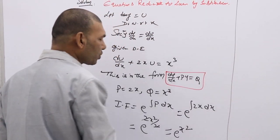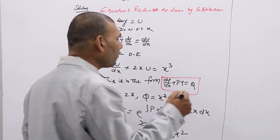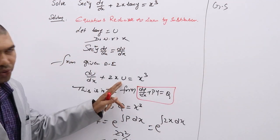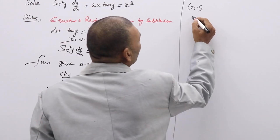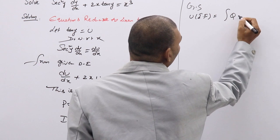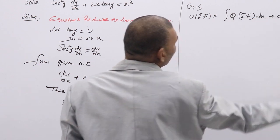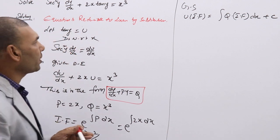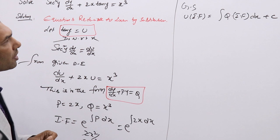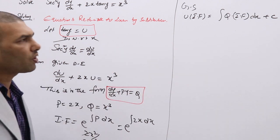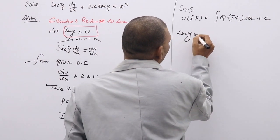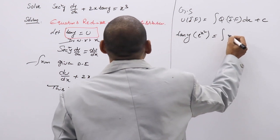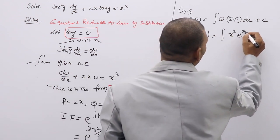Next, we find the general solution of this differential equation. The formula for the general solution of a DE in linear form is: u × (integrating factor) = ∫q × (integrating factor) dx + c. Substituting u = tan y and integrating factor = e^(x²), we get: tan y · e^(x²) = ∫x³ · e^(x²) dx + c.